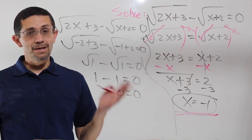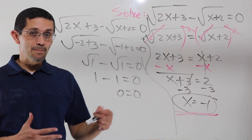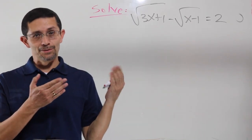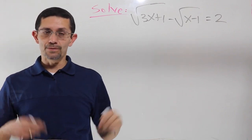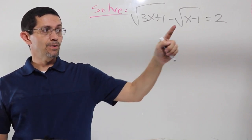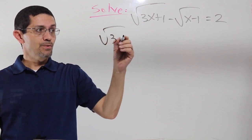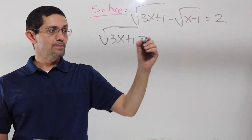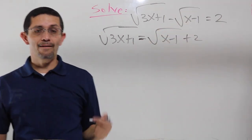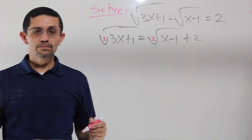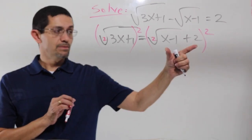Now let's do the one I call the monster of all of them — really confusing and a really long process, but these are the type of problems you'll get on a test. Same idea: I need to leave one of the radicals by itself on one side. This one goes to the other side — if it's negative, it goes positive. So I have square root of 3x plus 1 equals square root of x minus 1 plus 2. There's a tiny 2, meaning square roots, so I have to raise to the second power. The difference here is now I have two terms to the second power — keep that in mind.